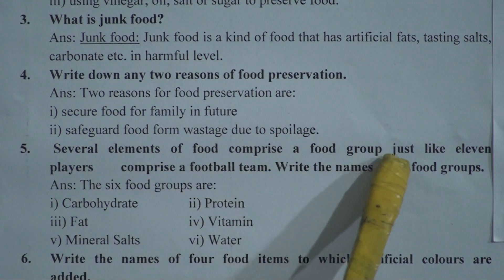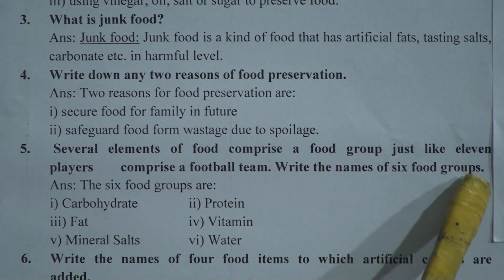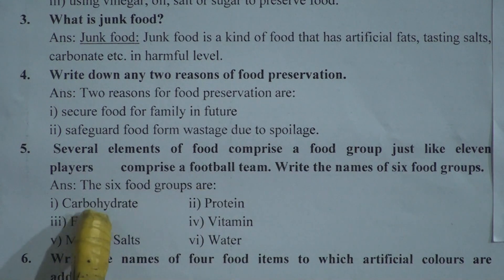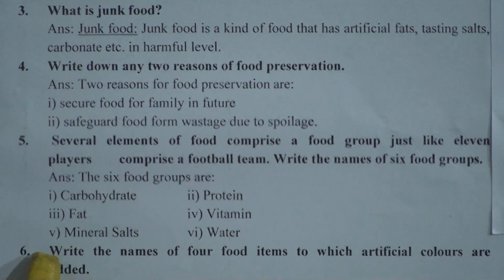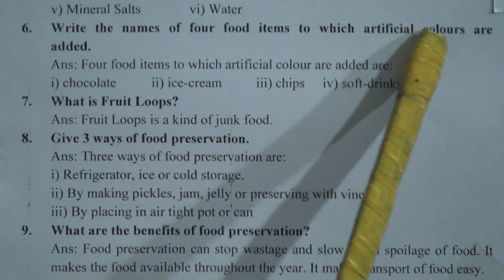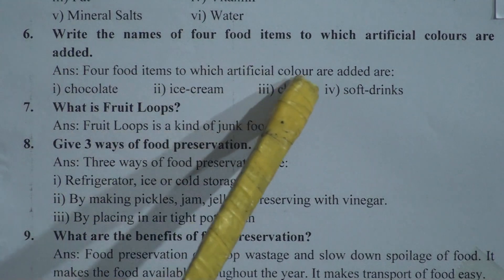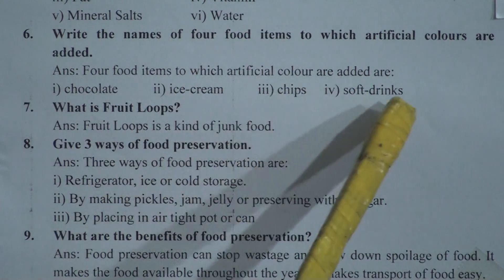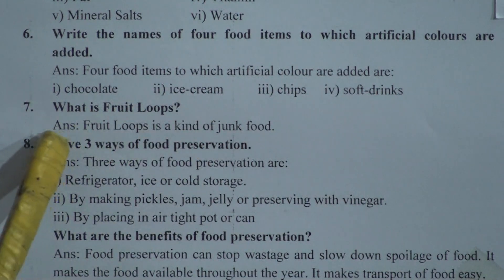Question 5: Several elements of food comprise food groups, just like 11 players comprise a football team. Write the names of the six food groups. Answer: The six food groups are carbohydrates, protein, fat, vitamins, mineral salts, and water. Question 6: Write the names of four food items to which artificial colors are added. Answer: Four food items to which artificial colors are added are chocolate, ice cream, chips, and soft drinks.